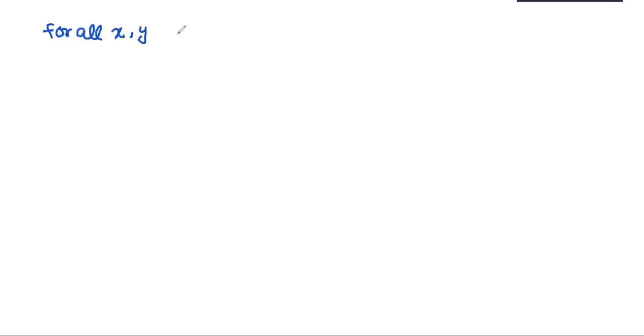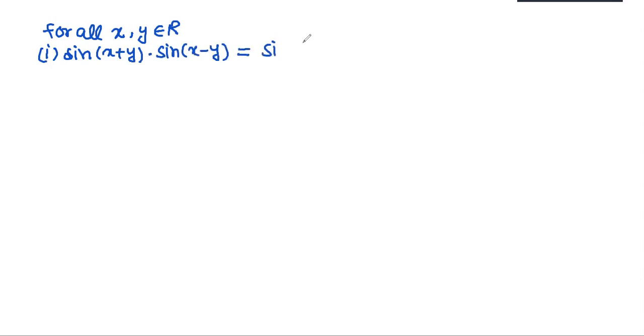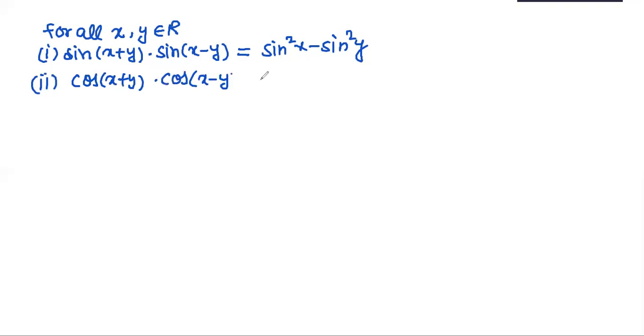Now we will discuss two more identities that are not in the NCERT book. For all x, y belonging to real numbers: the first identity is sin(x + y) · sin(x − y) = sin²x − sin²y, and the second identity is cos(x + y) · cos(x − y) = cos²x − sin²y. I am going to derive these two one by one.